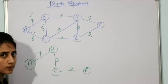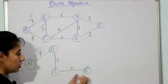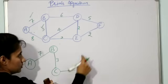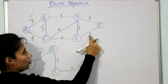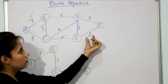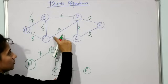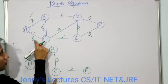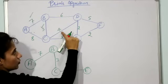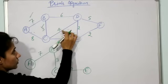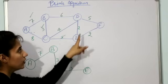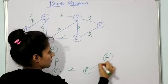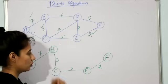Now check all outgoing edges from A, B, C, and E. From E the incident edges have weight two and two. From C we still have weight four, from B we still have weight six, and from A weight eight. Out of eight, six, four, two, and two, the minimum weight is two. Both edges have weight two, so you can choose either one — suppose we choose the edge to F with weight two.